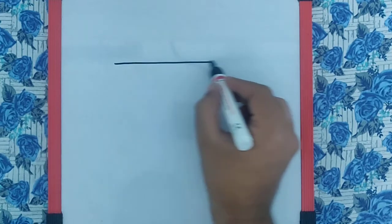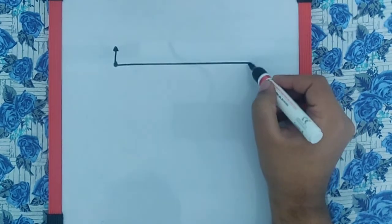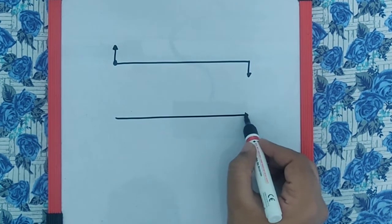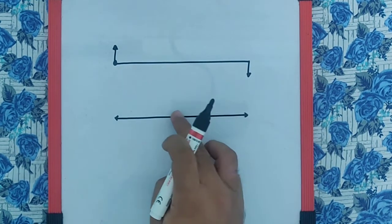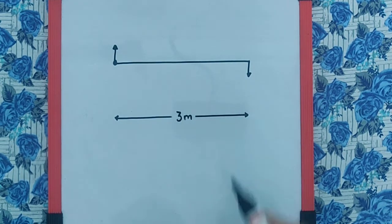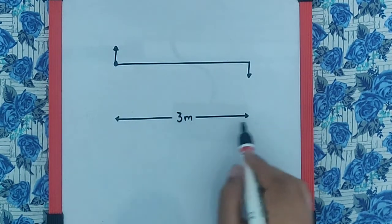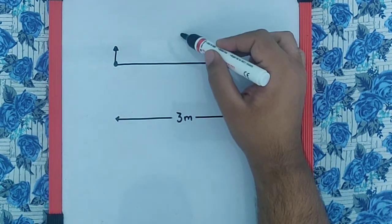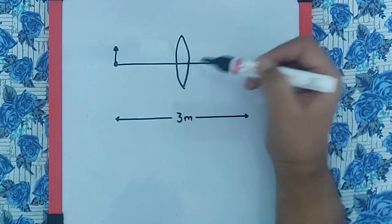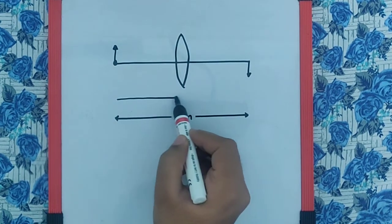Now, try and understand, the object and the image, the distance between them is 3 meters. So, if we want the object and image to be at this distance, we can basically keep the convex lens somewhere in between such that this distance...